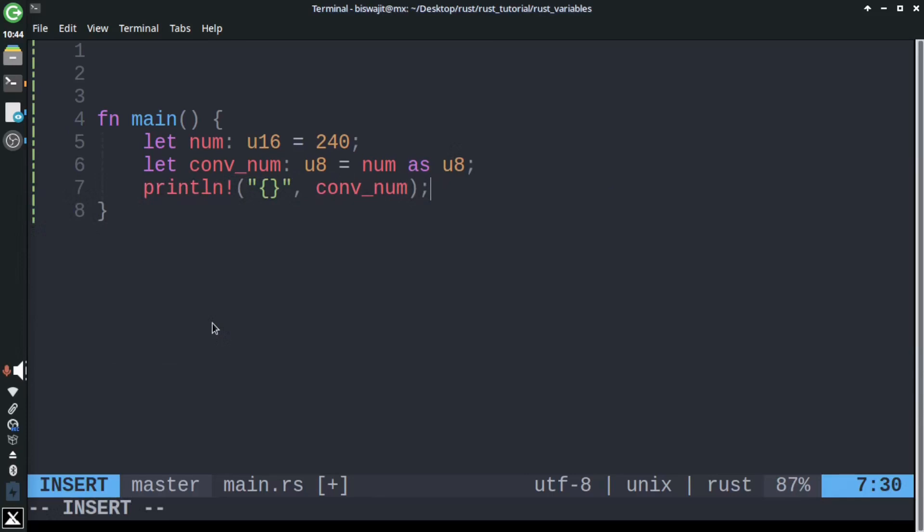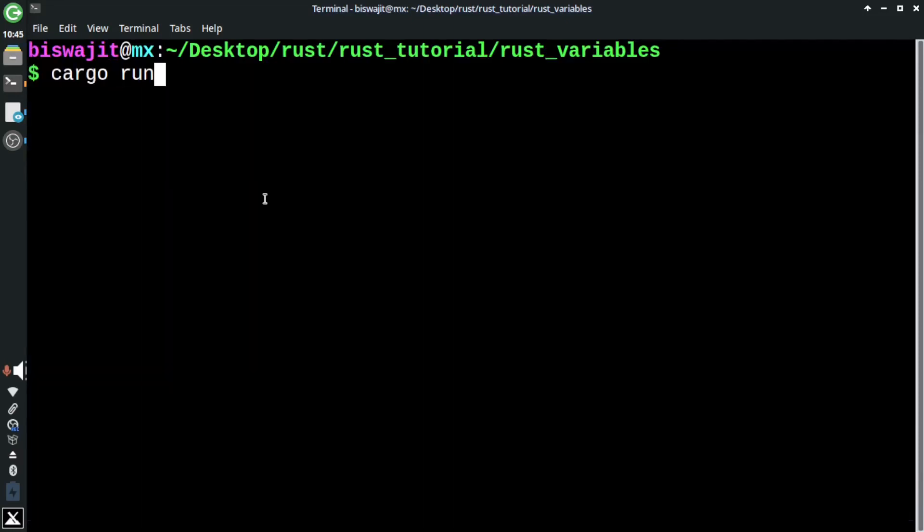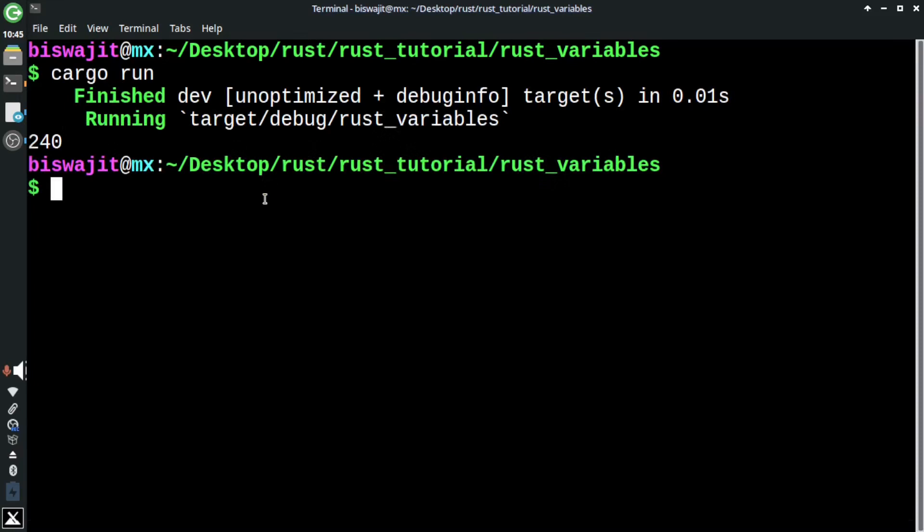Here we assign a smaller number to u16 variable. The reason behind taking a smaller number is this number can also be stored in u8 variable. Run the code to see the output. We got 240 as it is.